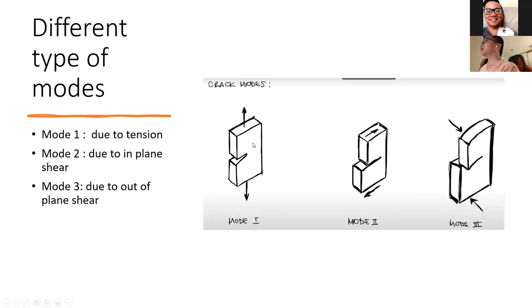There are three different types of cracks. The first one is the opening crack due to tension. The second one is the sliding crack due to in-plane shear. The last one is the tearing crack due to out-of-plane shear. We can have combinations of more than one mode, but mode one is the most common.